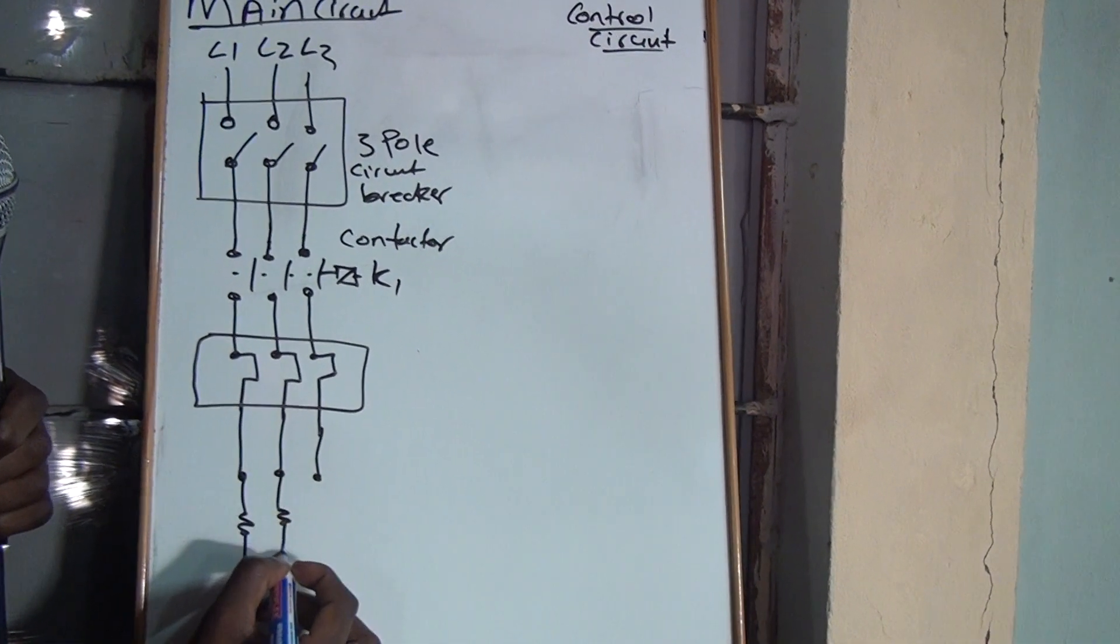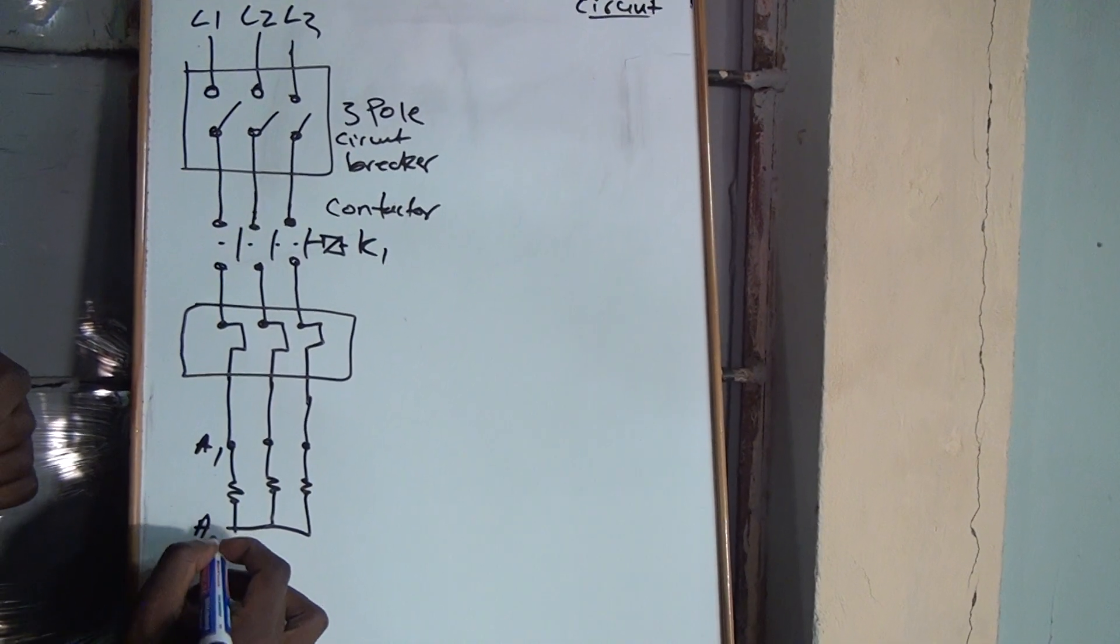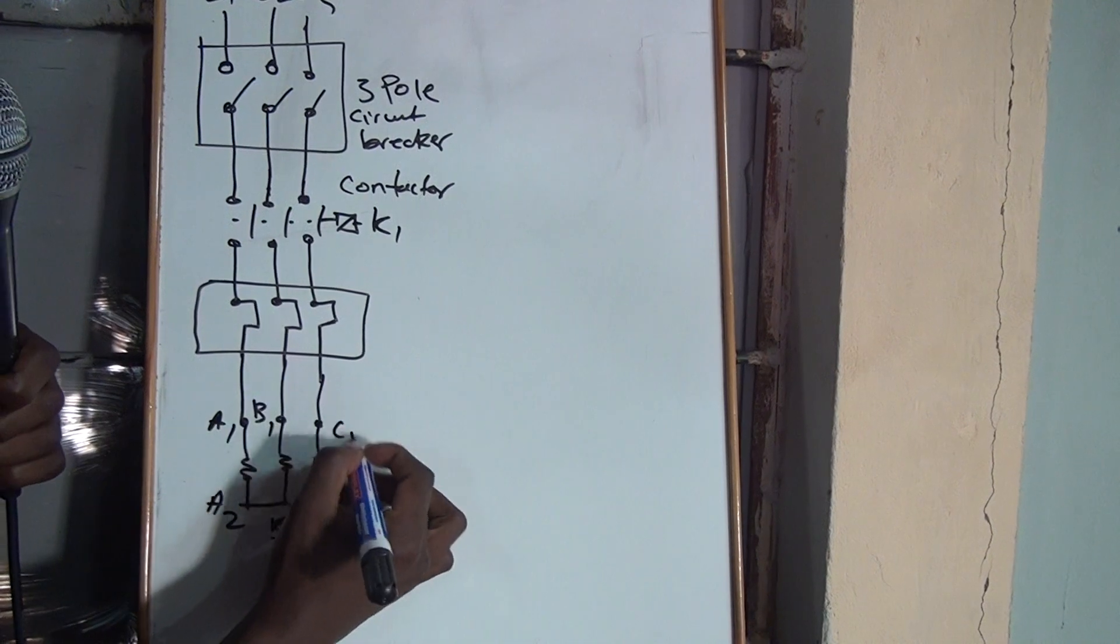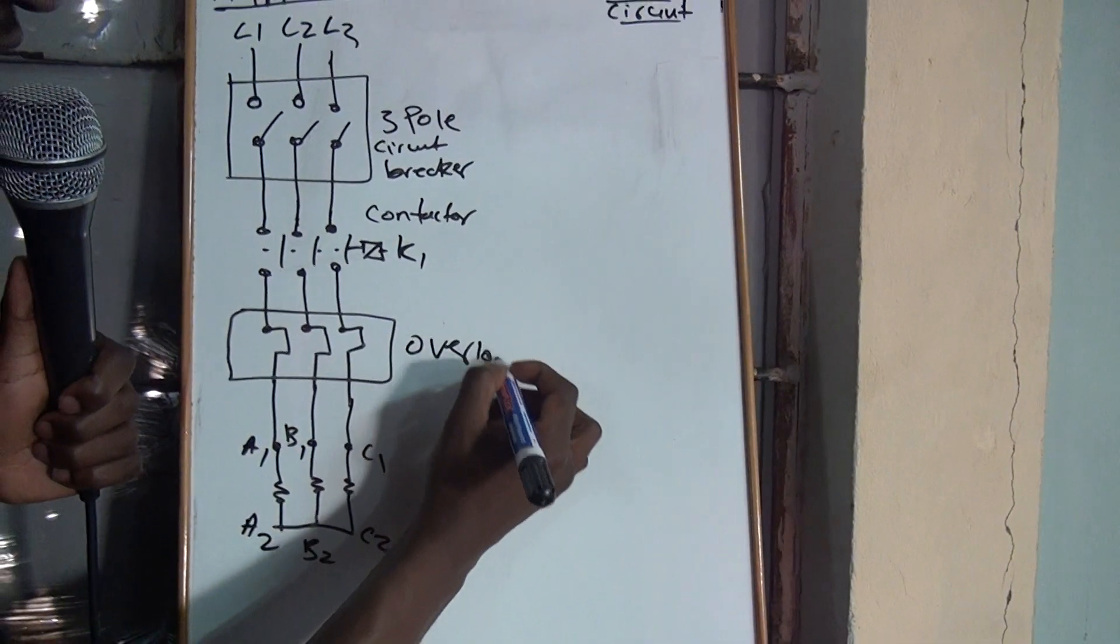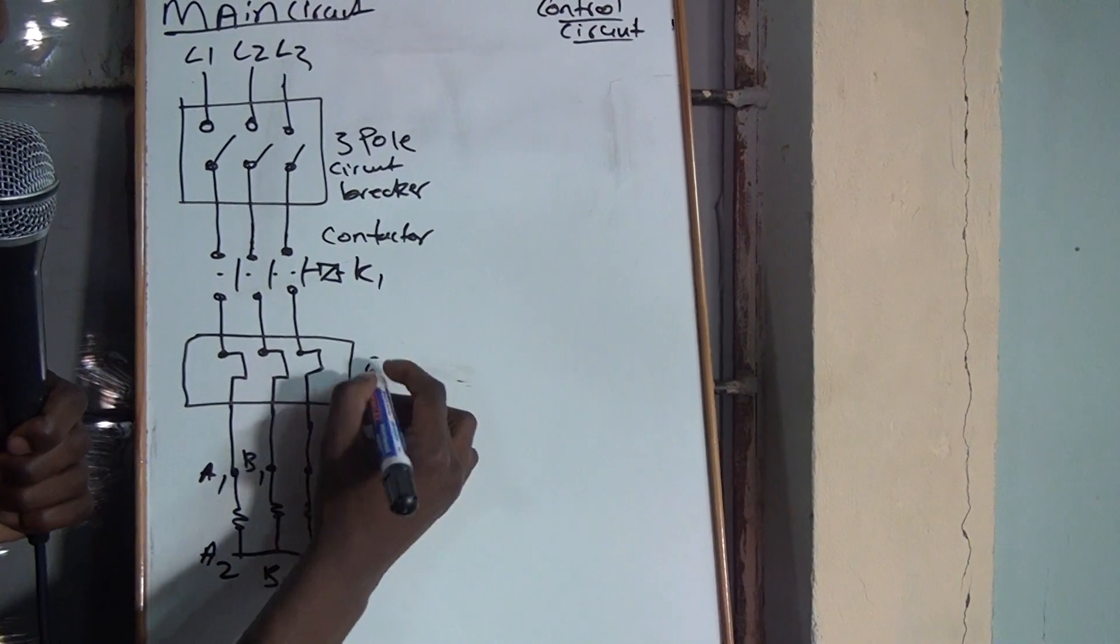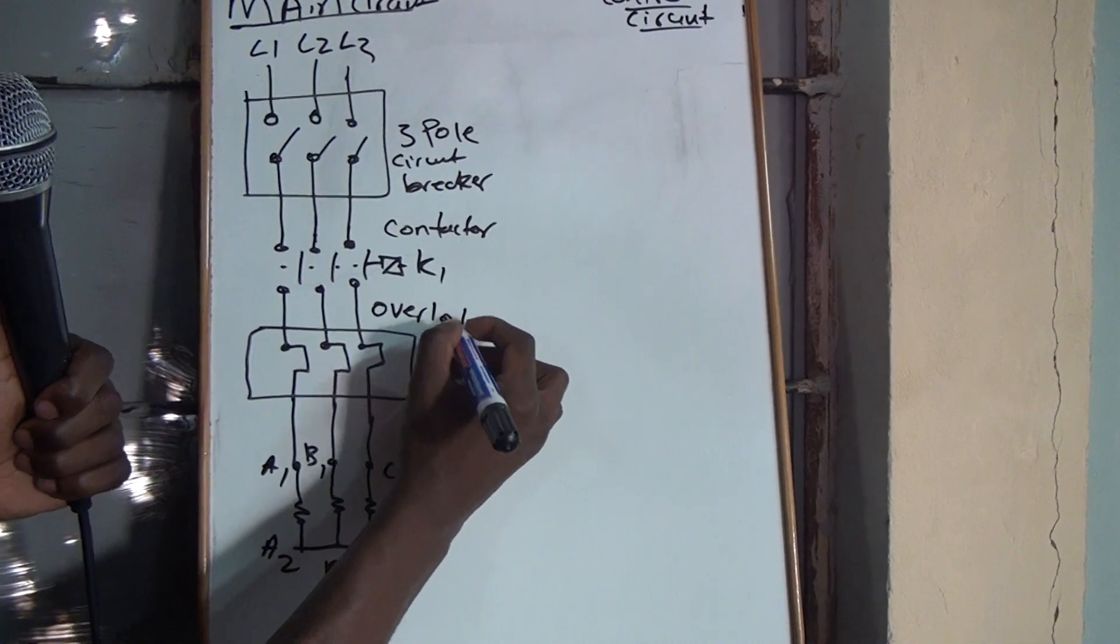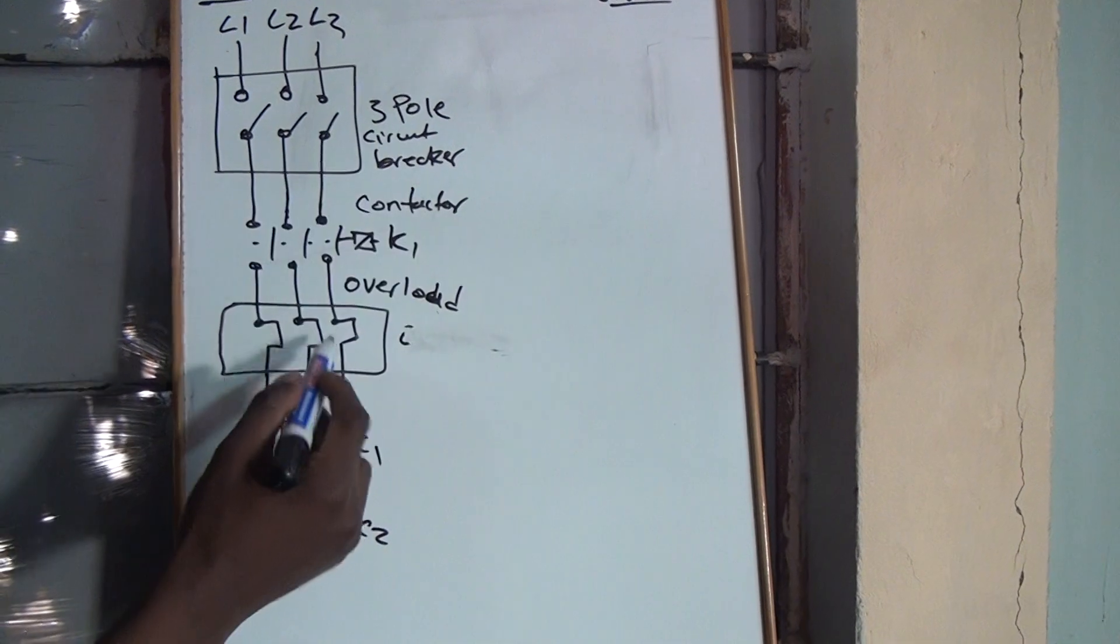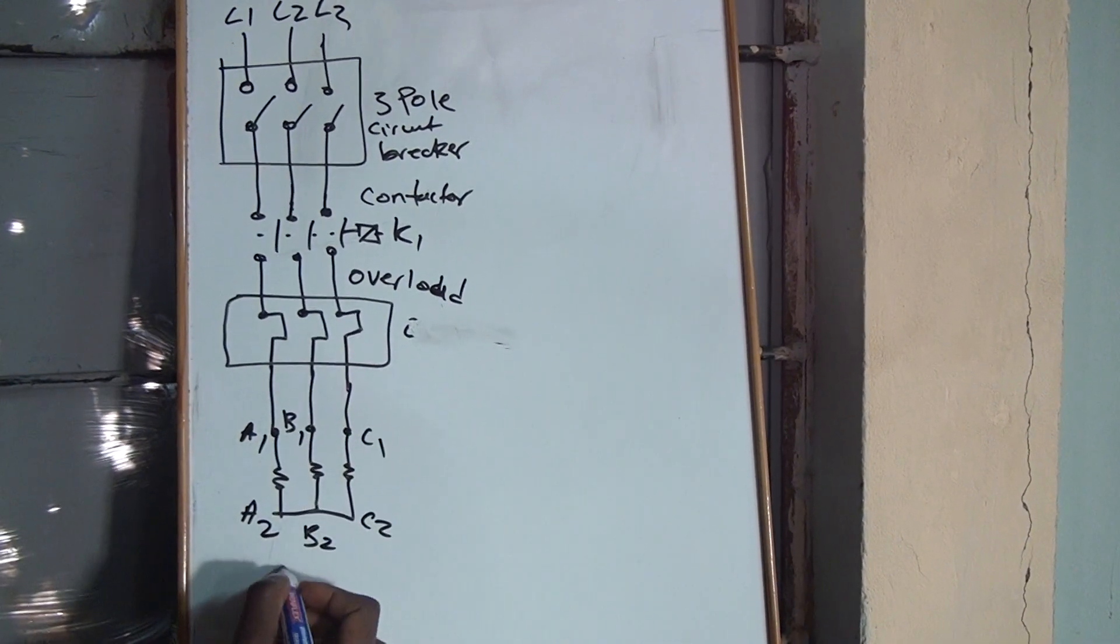And then, you'll have your motor which will be connected in star. Overload. Let me write it here so that we can have space. So, you have your triple pole circuit breaker. You have your contactor. You have your overload. You have your motor now.